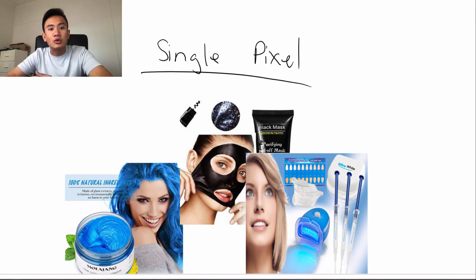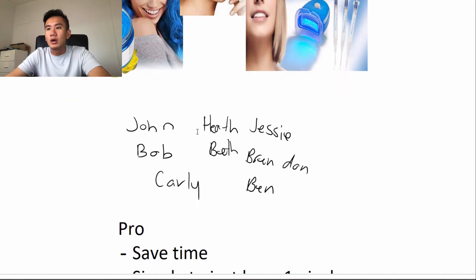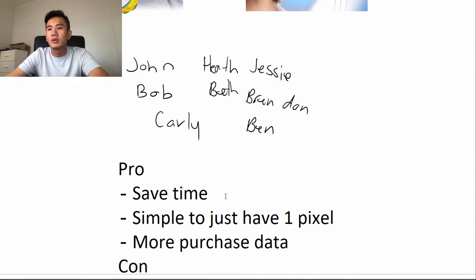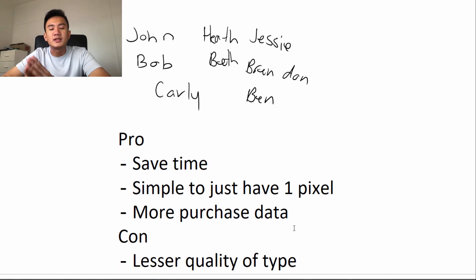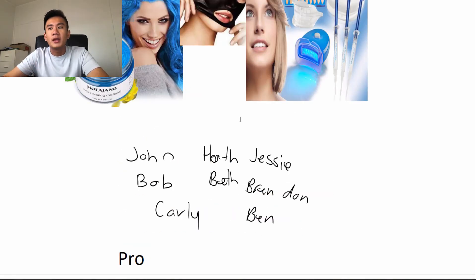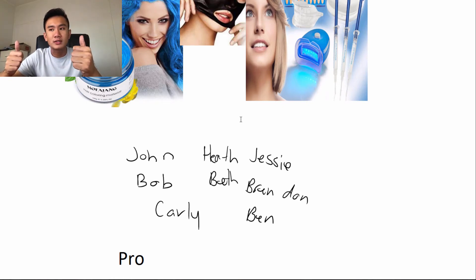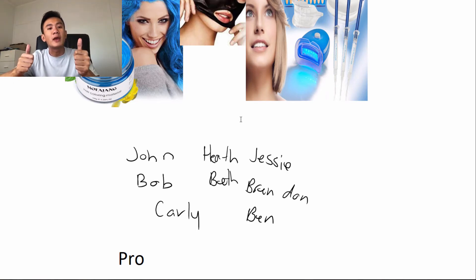Next example: a single pixel, where you have a single pixel for all your ad accounts and all your winning products. All data will be put into one, so now we have eight people all in one pixel. The pros are it saves time, and it's simple and easy to just have one pixel. Another pro is there's more purchase data — having eight people together is much better than only having three per pixel. The con: it's a lesser quality type of data. A general pixel with eight purchases versus eight purchases specifically for a hair coloring wax — the individual pixel would do much better at finding you more purchases.